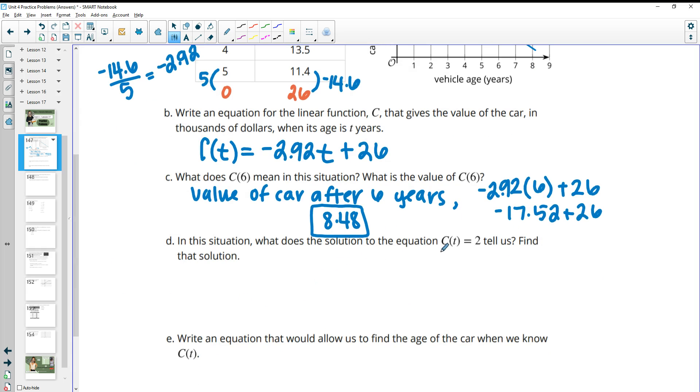In this situation, what does the solution to this equation, C(t) equals 2, tell us? So then this tells us the age of, or the cost of the car, the value of the car after a certain age. So this tells us the age that the car will be worth $2000, because the 2 represents 2 thousand. So this, if we solve it, will get us the age that the car will be worth 2000.